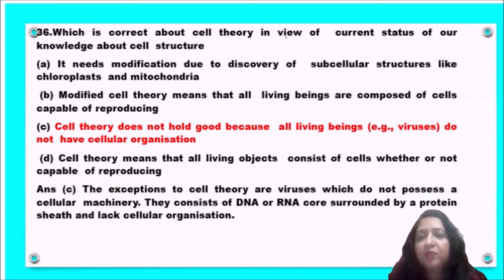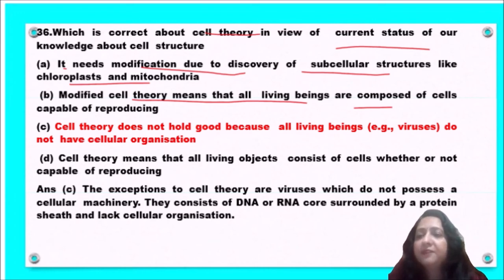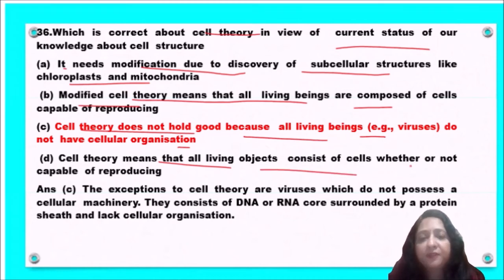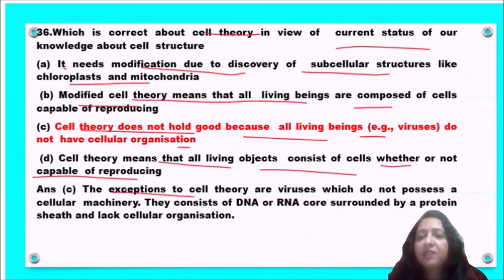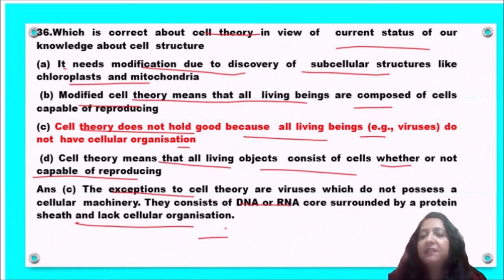Next question: what is correct about cell theory in view of current knowledge — it needs modification due to discovery of subcellular structures; modified cell theory means all living cells are capable of reproducing; cell theory does not hold good because of viruses; or cell theory means all living objects consist of cells whether or not capable of reproducing? The exception to cell theory are viruses, which do not possess cellular machinery — they consist of a DNA or RNA core surrounded by a protein coat and lack cellular organization. So option C is the correct answer.